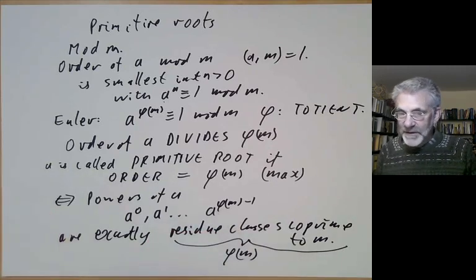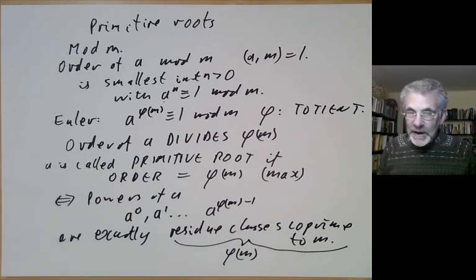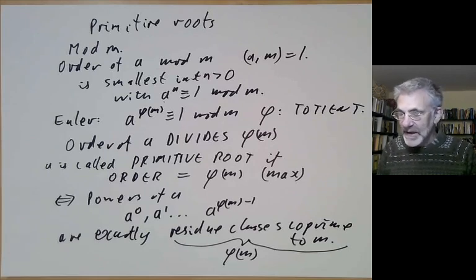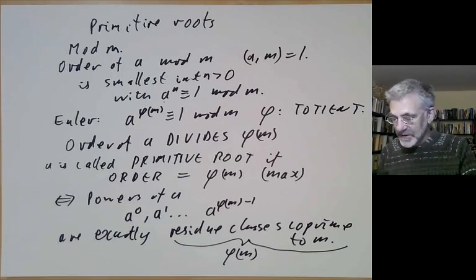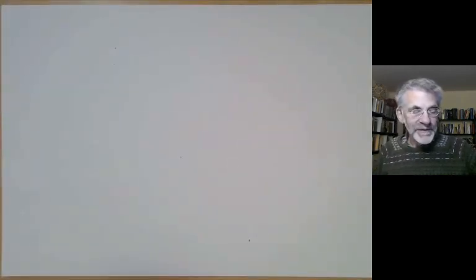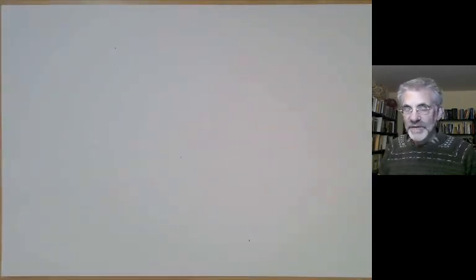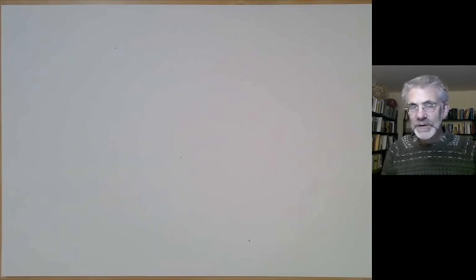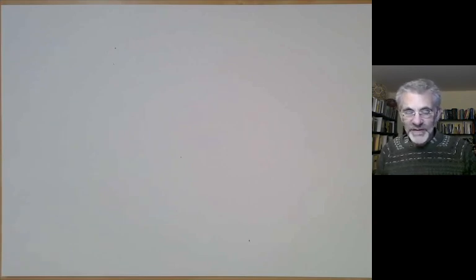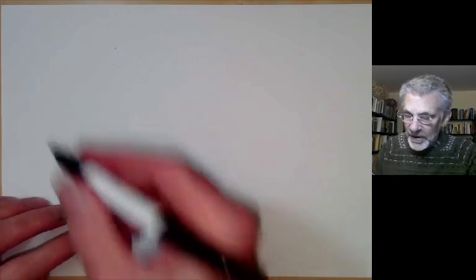So what we're going to do is answer the following questions: which numbers have primitive roots? How many primitive roots do they have, if any? And how do we find the primitive roots? We're going to do this the straightforward way, starting with numbers m equals 1, 2, 3, 4, and so on, working out the primitive roots and trying to see what patterns there are.